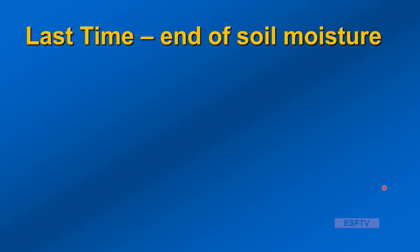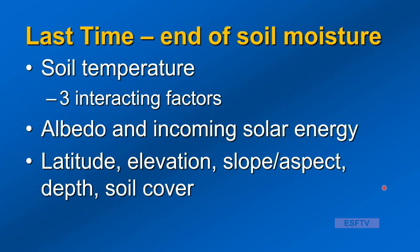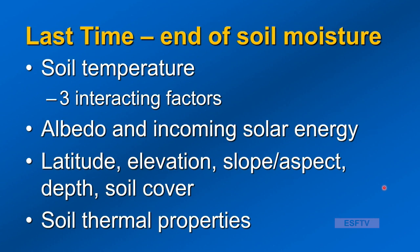Last time we were at the end of soil moisture, and we then finished up soil moisture and began soil temperature. We started with the big view of soil temperature: the three interactive factors that affect soil temperature. We talked about albedo and incoming solar radiation, latitude and elevation, slope and aspect, depth, and soil cover, and then left off at soil thermal properties.